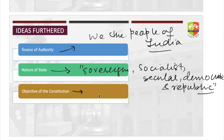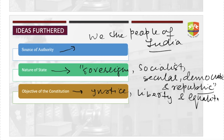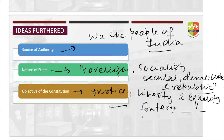The objective of the constitution can be found through the keywords justice, liberty, equality, and fraternity — assuring these for all citizens. The date given in the preamble is 26 November 1949.